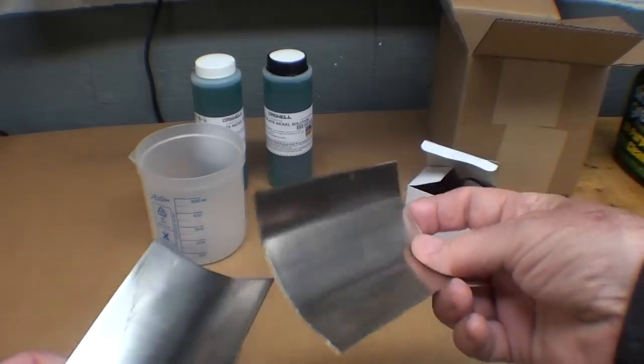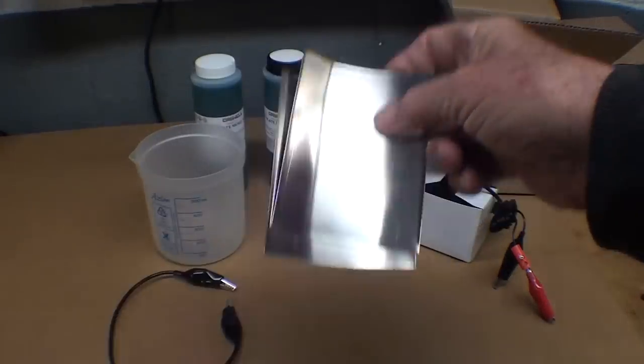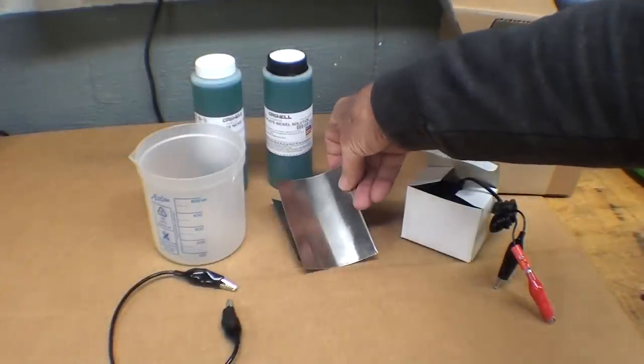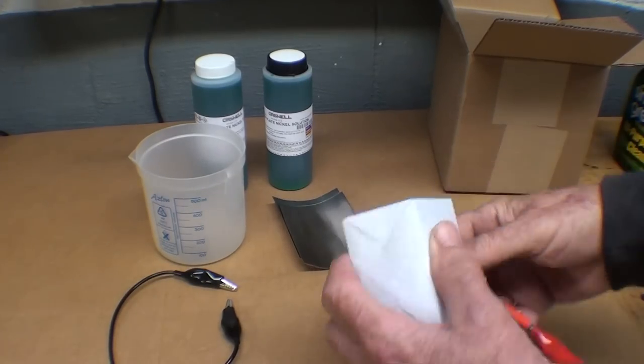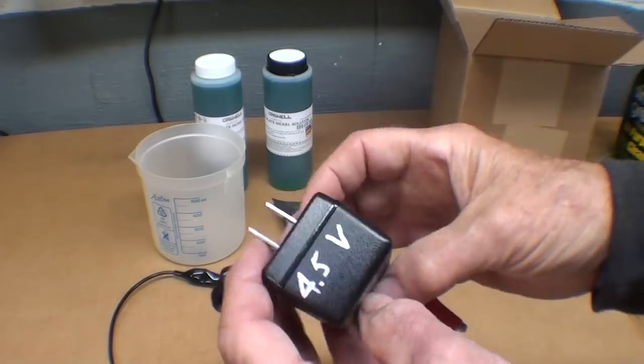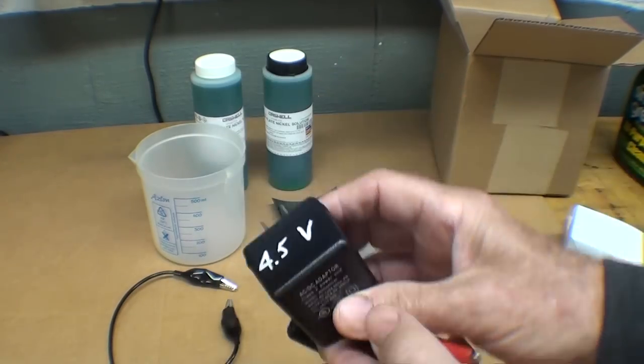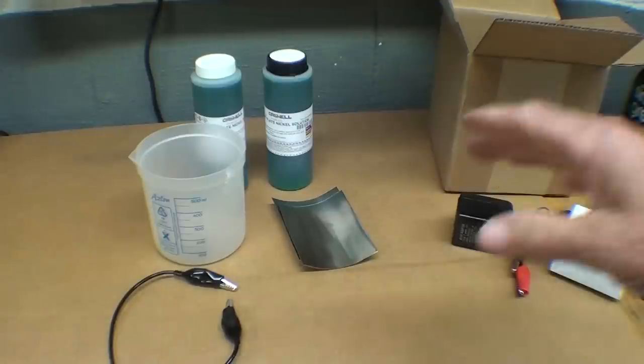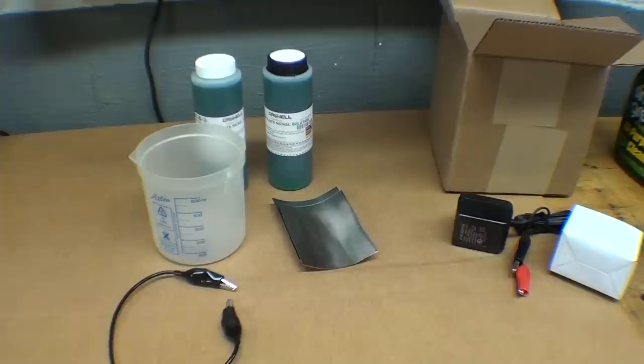A beaker to do the actual plating in, wire with alligator clips, and here are the actual nickel anodes. Remember, nickel is an element. And a wall wart—this is the power supply at four and a half volts.